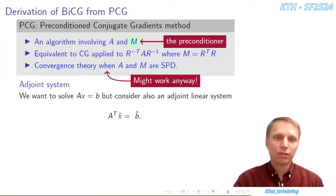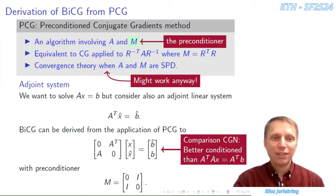To derive BiCG, we will consider an adjoined system consisting of the transpose system matrix A transpose and the right-hand side B hat, which will be arbitrary for the moment. We can merge the original system and the adjoined system into one equation. And BiCG can be seen as PCG applied to this adjoined system with a particular preconditioner.